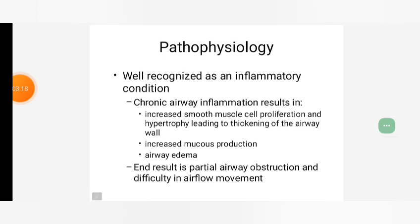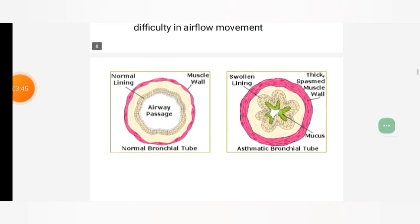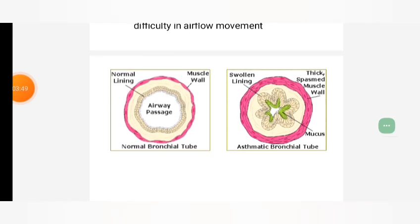Pathophysiology: Well recognized as an inflammatory condition, chronic airways inflammation results in increased smooth muscle cell proliferation and hypertrophy, leading to thickening of the airway wall, increased mucus production, airway edema. The result is partial airway obstruction and difficulty in airflow movement. This diagram shows a normal bronchial tube with normal muscle wall and normal lining, compared to the asthmatic bronchial tube with swollen lining and thickened, spasmed muscle wall.